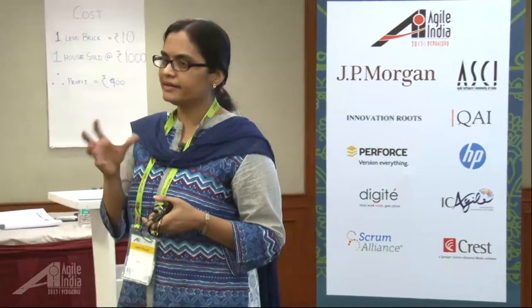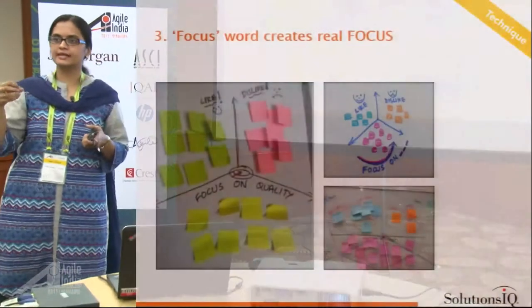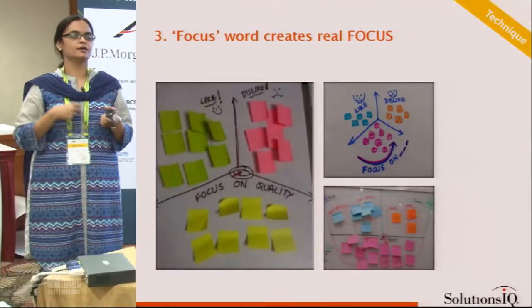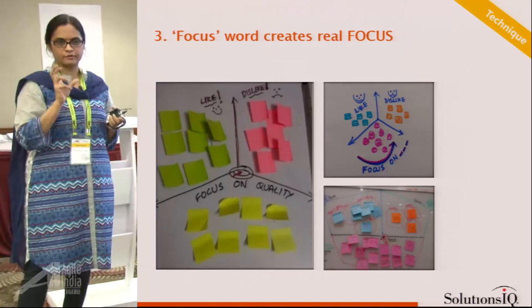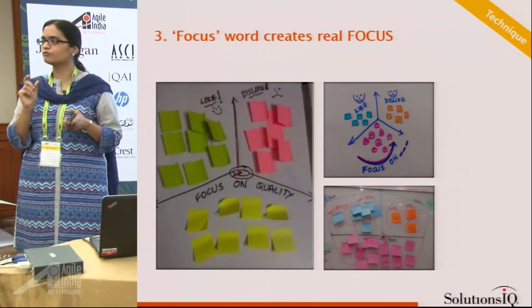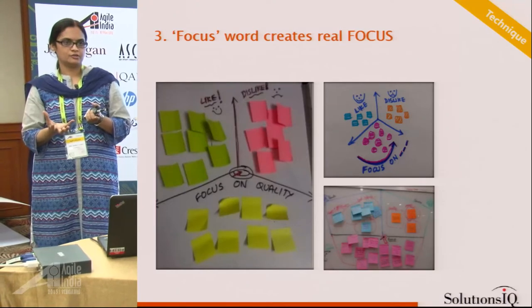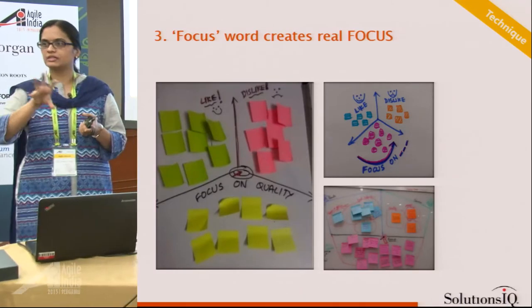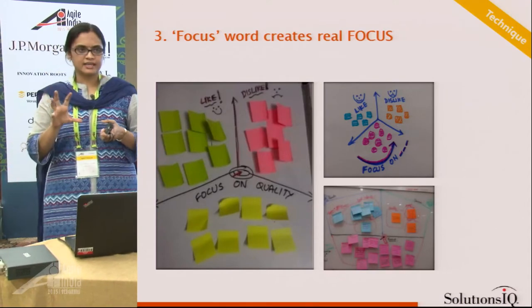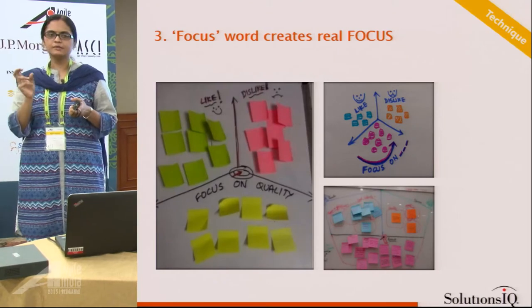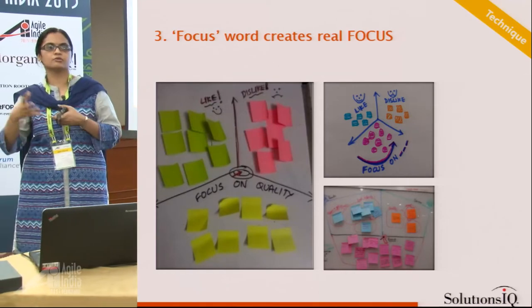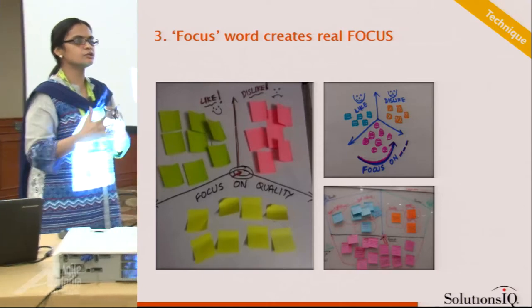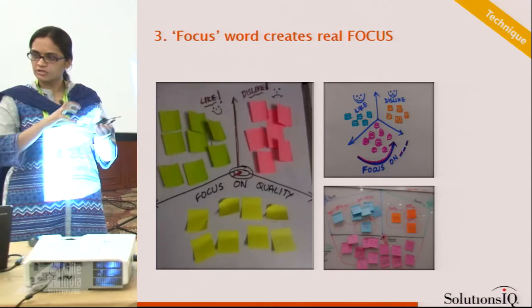One technique: one focus word creates real focus. Whenever I wanted my teams to focus on a specific aspect — for example, I was seeing repeated bugs and technical debt — I really wanted the team to focus on quality. What I did was add a specific focus quadrant to the normal retrospective technique, and that really helped. You can customize your existing retrospective and add a specific focus quadrant — focus on quality, story-to-done ratio, velocity — whatever you want the team to retrospect on.